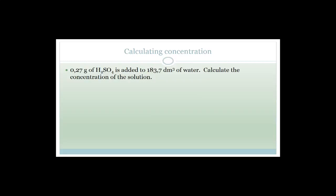Let's work out the concentration. Concentration equals number of moles over volume. You should have your periodic table, data sheets, and formula sheets with you. Number of moles equals mass over molar mass. So we have the mass and the volume, and we need to find the number of moles, which means we need the molar mass of H₂SO₄.